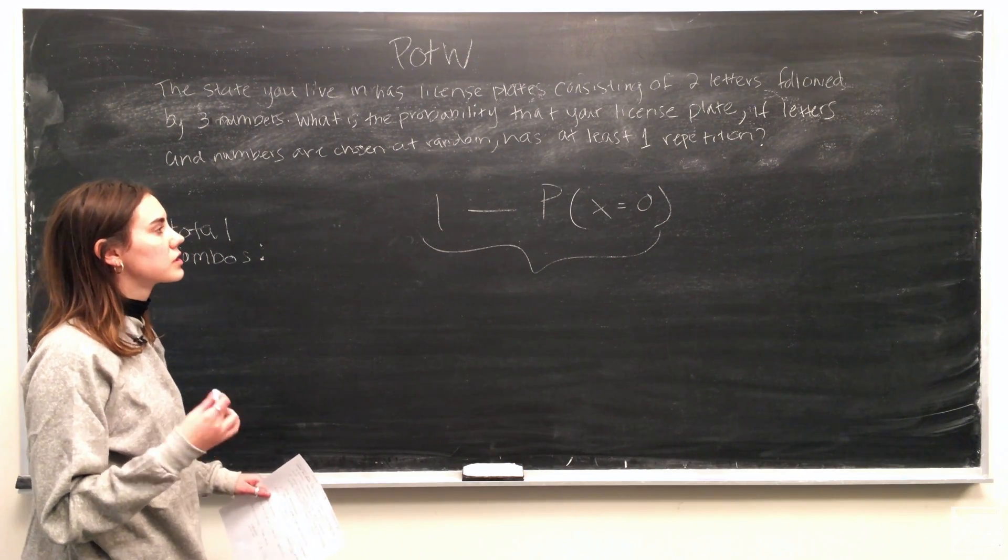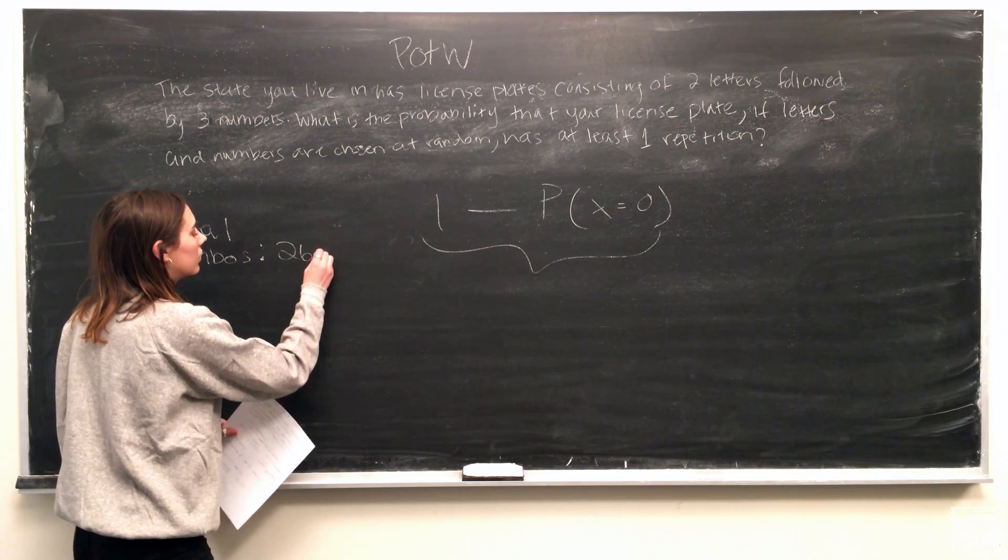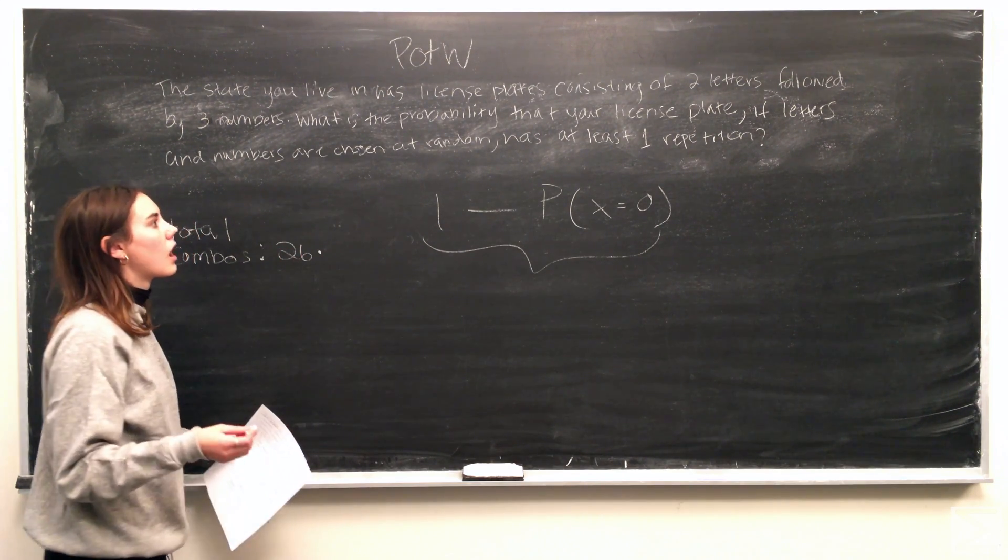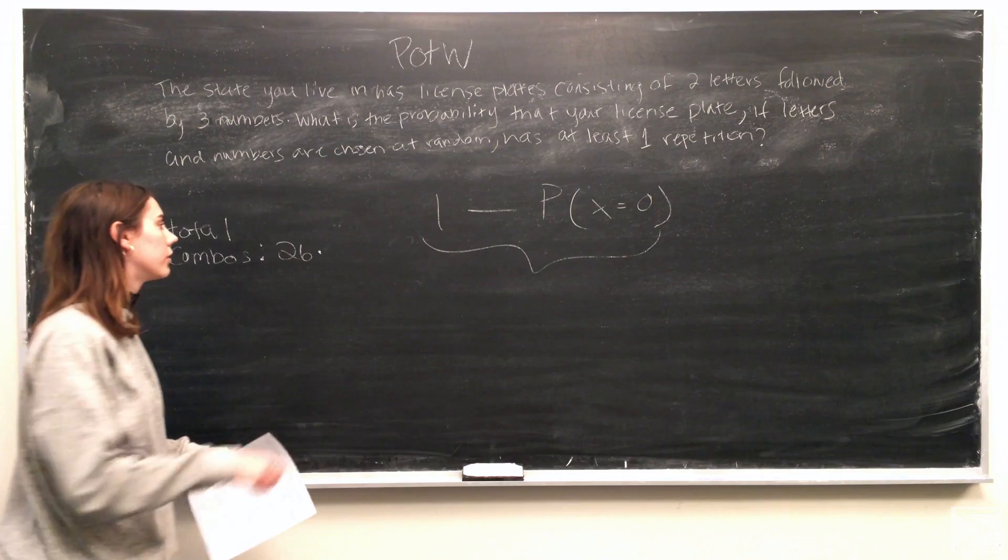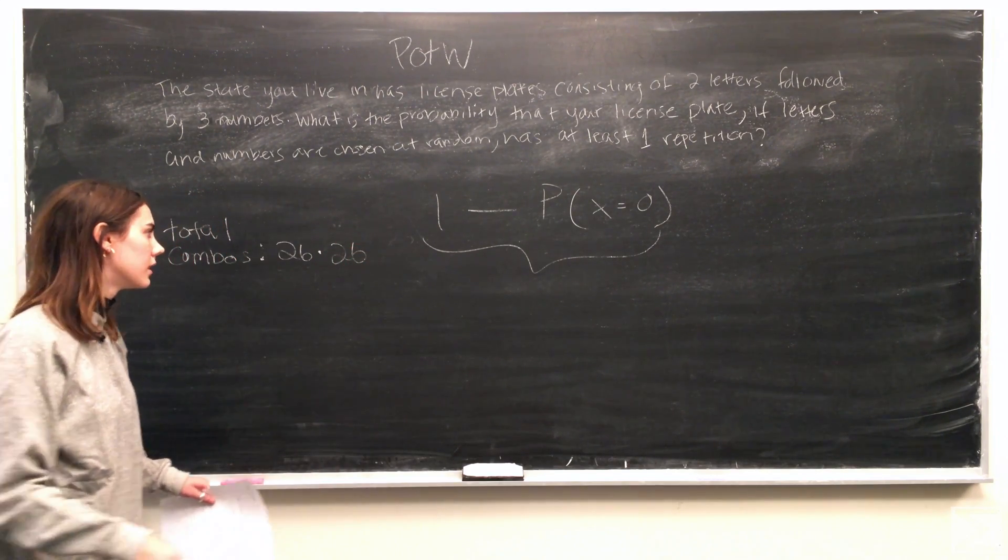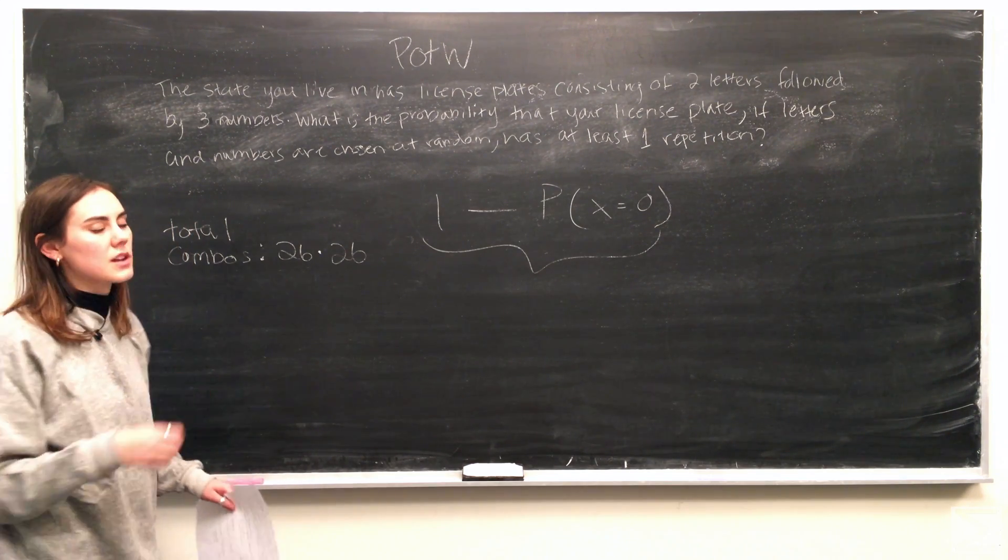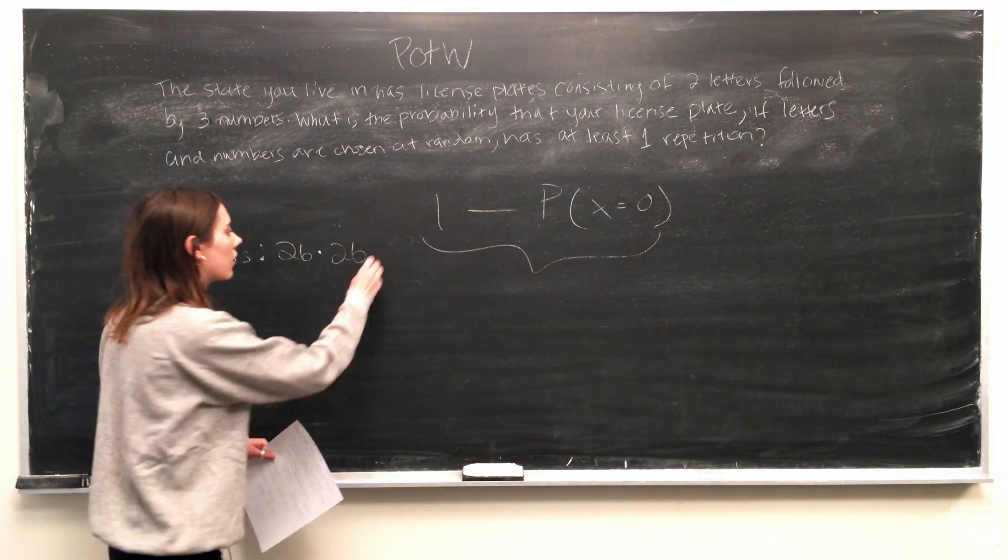So the first two spots are two letters, so we know from the alphabet there's 26 letters. And if we're including repetitions, then the second choice for the second letter will also be 26. It's then followed by three numbers, which is the numbers 0 through 9. So there's 10 choices.